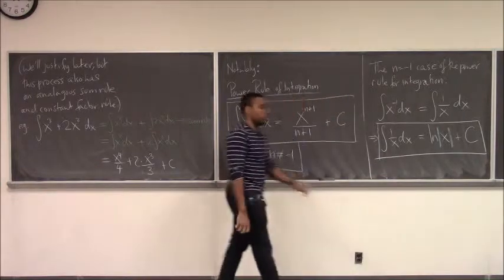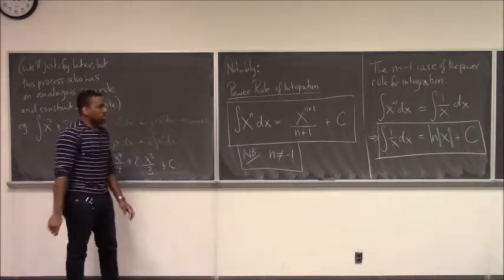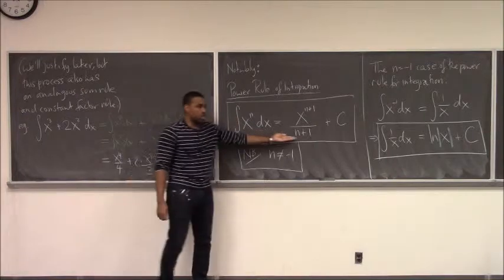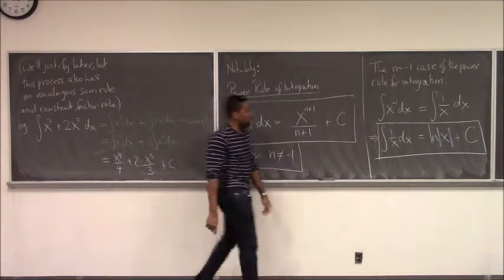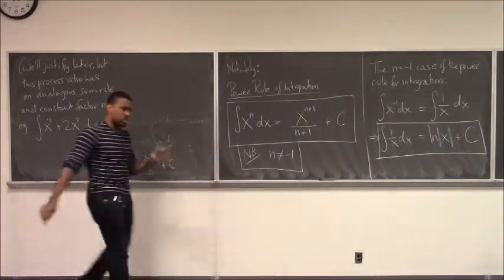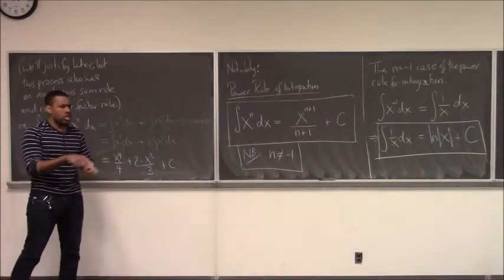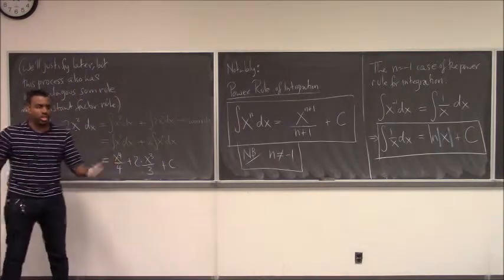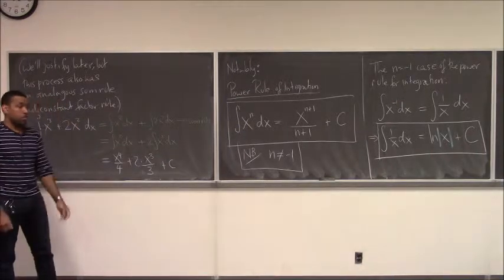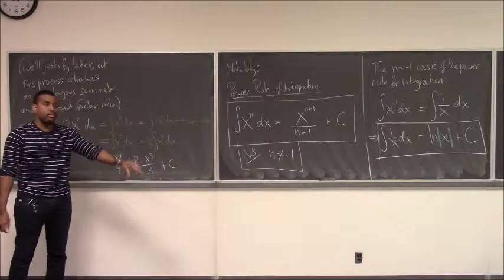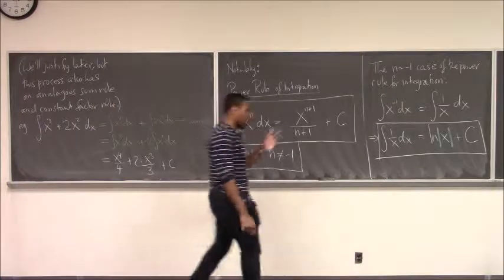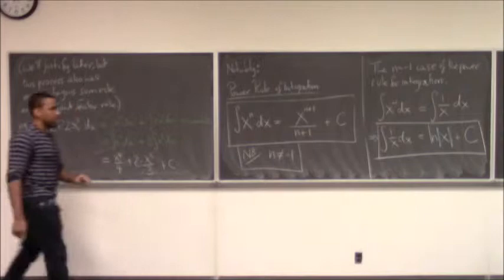So the antiderivative of 1 over x dx is ln of the absolute value of x plus C. That deals with all the powers. For trig functions, those are pretty easily reversible — you pretty much just swap the sides. The derivative of sine x was cosine x, so the antiderivative of cosine is sine. The derivative of tangent x is secant squared of x, so the antiderivative of secant squared of x is tangent x plus C. All those derivative rules we're now reversing.